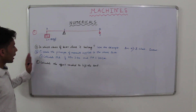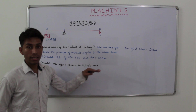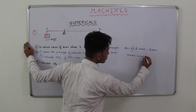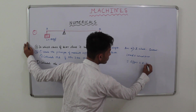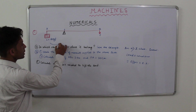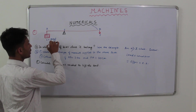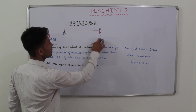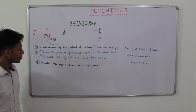Moving on to part (b): state the principle of moments applied to the above lever. The principle of moments is: load × load arm = effort × effort arm. That is, the moment of load in the clockwise direction is equal to the moment of effort in the anticlockwise direction.